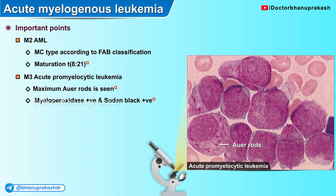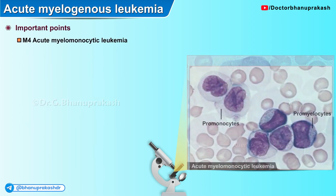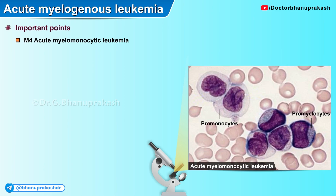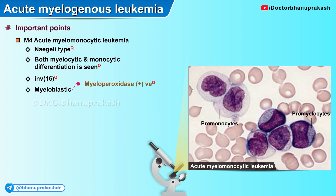M3 cells are myeloperoxidase positive and Sudan black positive. The most common cytogenetic abnormality seen is translocation t(15;17) with a number of faggot cells. In the M4 variant, acute myelomonocytic leukemia (Naegeli type), both myelocytic and monocytic differentiation is seen, with inversion 16 being the most common cytogenetic abnormality. Myeloblasts are myeloperoxidase positive and Auer rods are usually visible, whereas monoblastic cells are non-specific esterase positive.